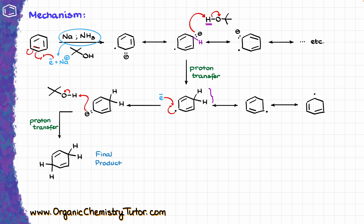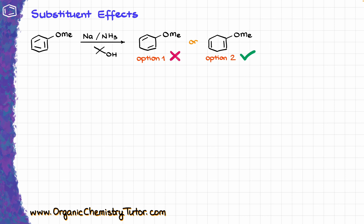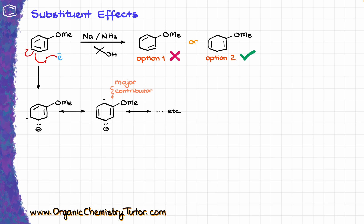Now, what happens when we have substituents on our molecule? Let's say we're doing this reaction with anisole, which has a methoxy group on our aromatic compound. In this case we could have two potential options as our final product — and I'll give you a spoiler: it's going to be option two and not option one. Let's look at the mechanism. We bring in our solvated electron and have an interaction between this electron and our aromatic ring, giving us the intermediate. We're going to have a whole bunch of resonance contributors, and I'll show the major contributor — where the radical and the negative charge are as far from each other as possible.